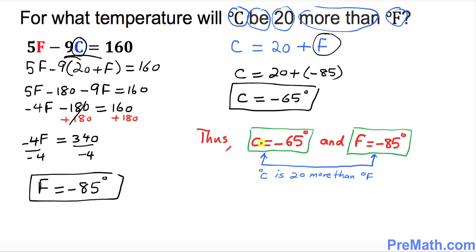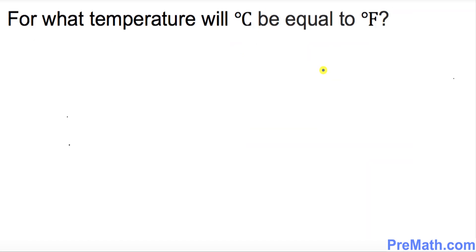Thus, at C equal to negative 65 degrees and F equal to negative 85 degrees, degrees Celsius is 20 more than degrees Fahrenheit. Now for the next problem: for what temperature will degrees Celsius be equal to degrees Fahrenheit?